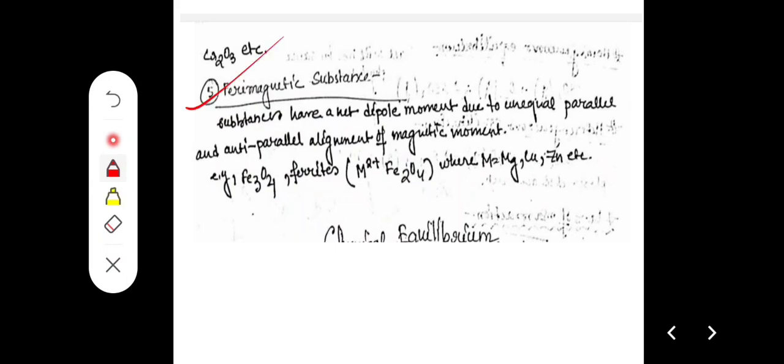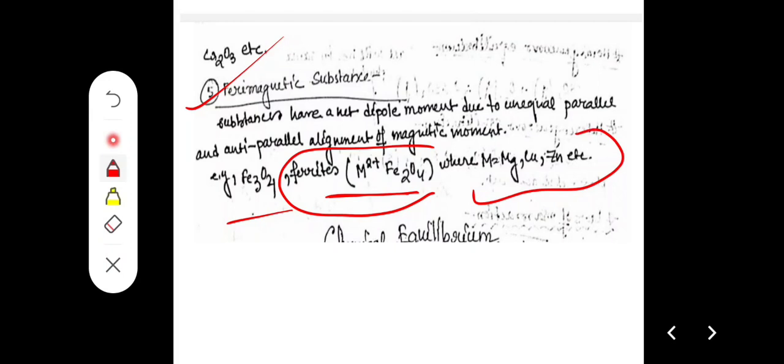Ferrimagnetic substances have a net dipole moment due to unequal parallel and anti-parallel alignment of magnetic moments, so the net dipole moment is not zero and they exhibit magnetic characteristics. Examples are Fe3O4 and ferrites of the structure M2+Fe2O4, where the metal M belongs to magnesium, copper, or zinc. These are termed ferrites.